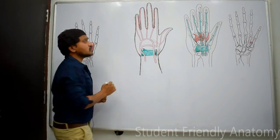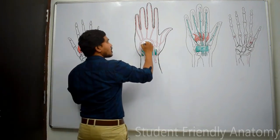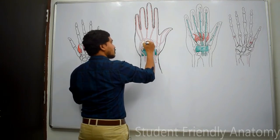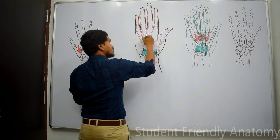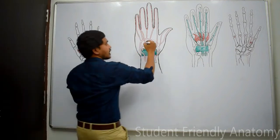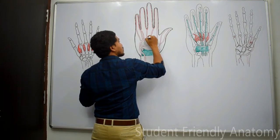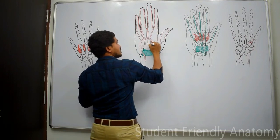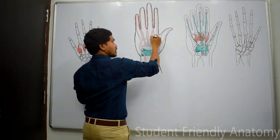The deep palmar arch gives three palmar metacarpal arteries, which anastomose with the common palmar digital arteries from the superficial palmar arch at the interdigital clefts. It also gives three perforating arteries.